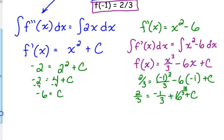That would be 18 over 3. So we've got 2 thirds is equal to negative 1 plus 18. So 17. That looks terrible. So 17 over 3 plus C.